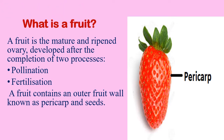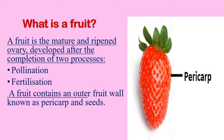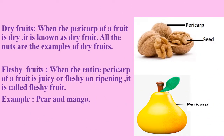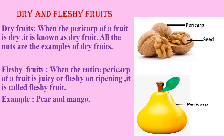Let us see what is a fruit. A fruit is the mature and ripened ovary developed after the completion of two processes: pollination and fertilization. A fruit contains an outer fruit wall known as pericarp and seeds. Based on the nature of the pericarp, fruits can be of two types: dry fruits and fleshy fruits.